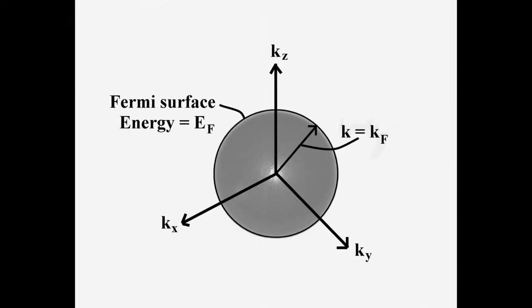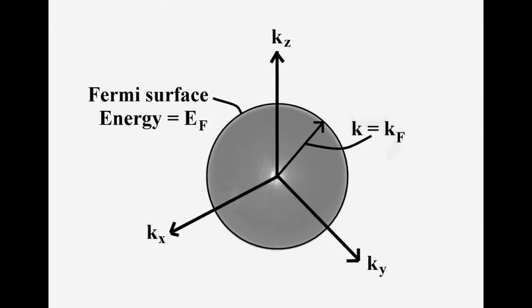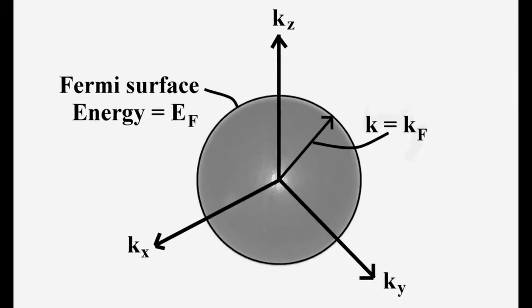If there are a large number of electrons in the solid, the occupied region in K space will look like a sphere, as depicted in this diagram. The sphere has a radius Kf, known as the Fermi wave number. Each of the occupied electron energy levels is represented by a point within this sphere, so the sphere surface separates occupied levels from unoccupied levels.